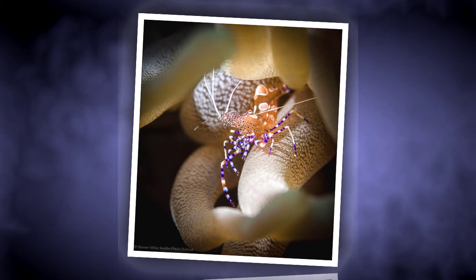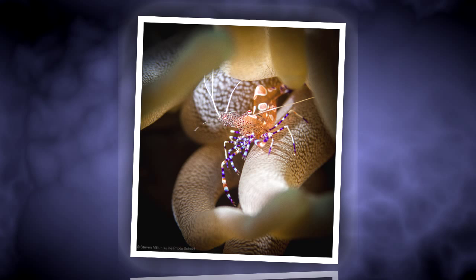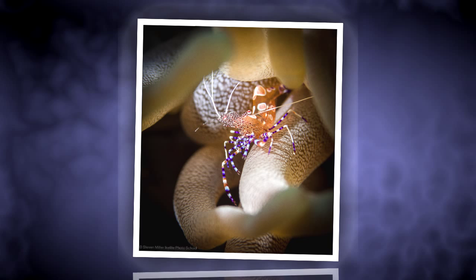But the problem with the snoot in a macro situation like this is that if your subject moves, it's virtually impossible to make sure you're hitting them with that little pencil beam while you're focusing through the lens. It's almost impossible. Most of the better snoot work that you've seen out there is done with a stationary subject.